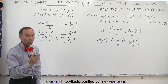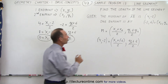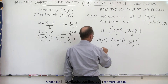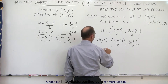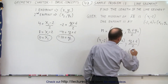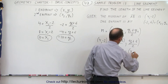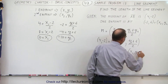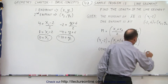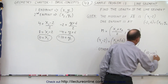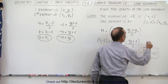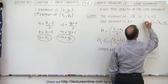We now have the coordinates of our other endpoint. Therefore, the other endpoint (x1, y1) is equal to (10, -10). So now we have one endpoint at (-2, 6) and another endpoint at (10, -10).